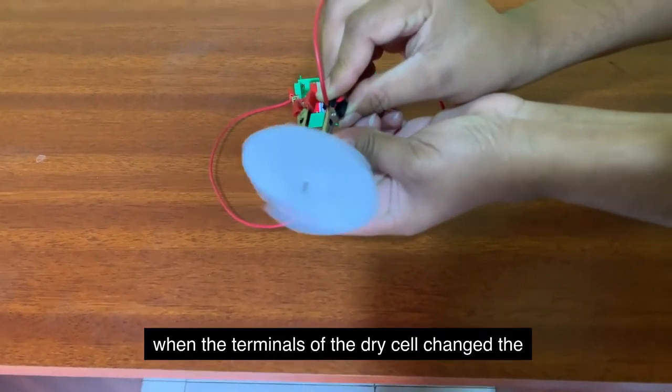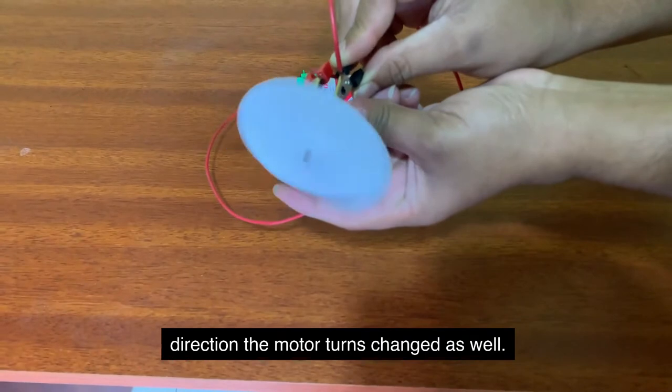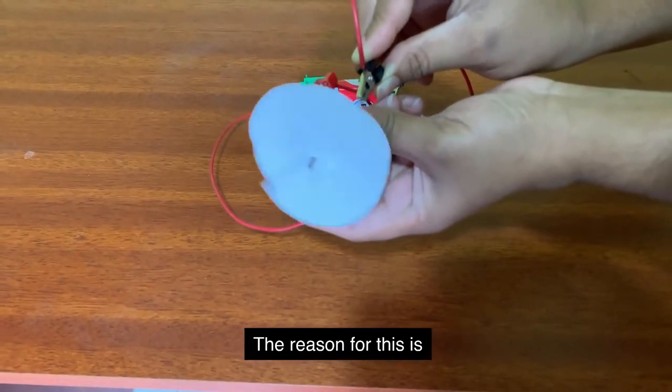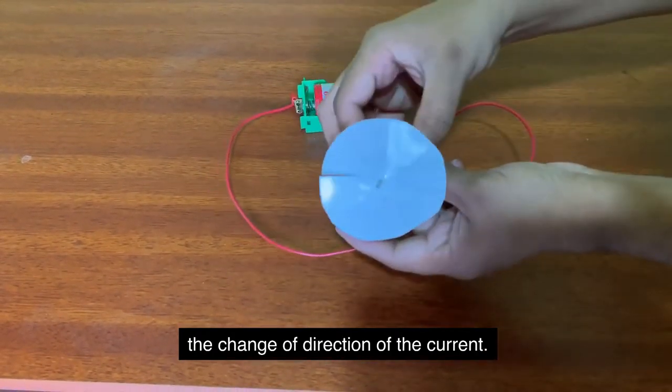When the terminals of the dry cell changed, the direction the motor turns changed as well. The reason for this is the change of direction of the current.